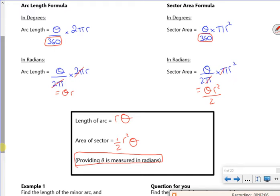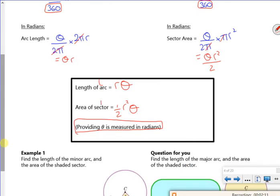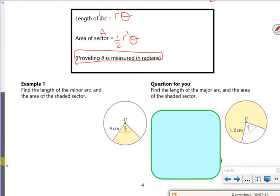So my arc length is rθ - I'm going to say l for the arc one. And my area is ½r²θ. Right, so we've got half r squared theta.